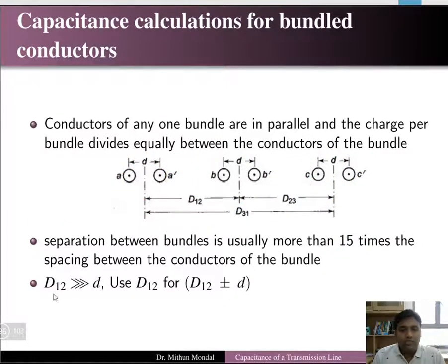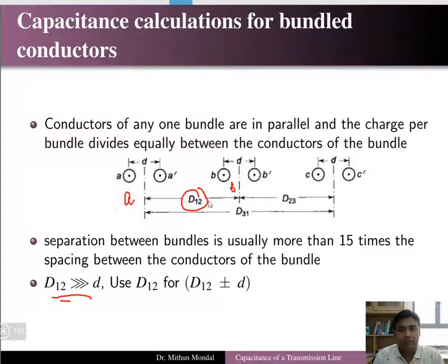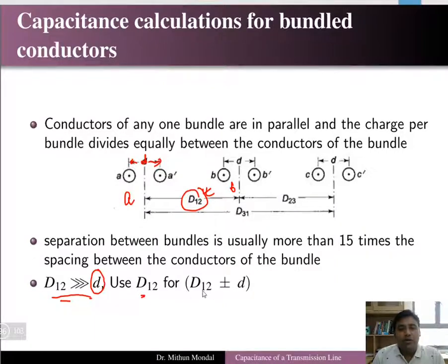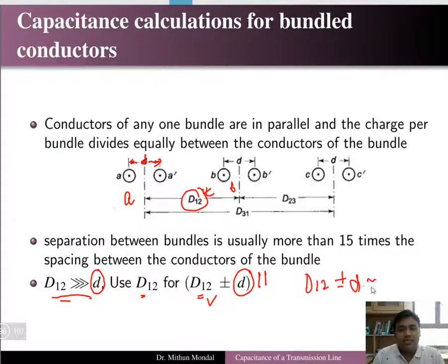The distance of separation D12 between phase A and phase B is very much greater than the separation between the individual elements of the bundle. Therefore, D12 ± d can be considered approximately equal to D12. This assumption will be used throughout our calculations.